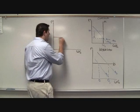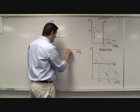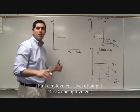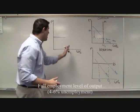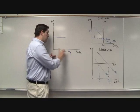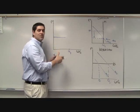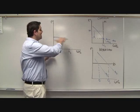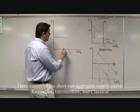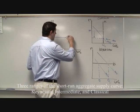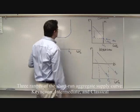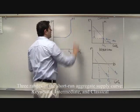So take a look — this quantity right here is the quantity of full employment, quantity Y, where we have 4 to 6% unemployment. That's where we want to be. When we're producing below that, in a recession, we're going to have the Keynesian aggregate supply curve, where it's horizontal. As we get closer and closer to full employment, it starts going up. And eventually it goes straight vertical.